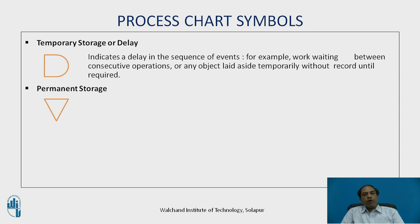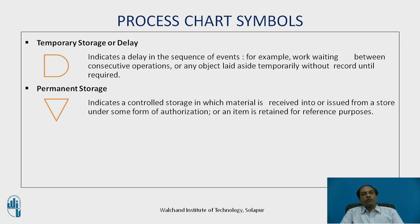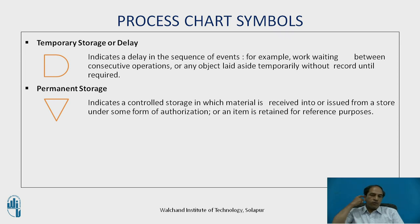The next symbol is permanent storage, indicated by an inverted triangle. It indicates a controlled storage in which material is received into or issued from a store under some form of authorization, or an item is retained for reference. Organizations have a variety of stores — raw material storage, finished goods storage, tool storage, inspection storage, etc. A job is typically taken from raw material storage, processed through various workstations, and then placed in the finished goods store before shipping. These are the five basic symbols used for drawing a process chart.